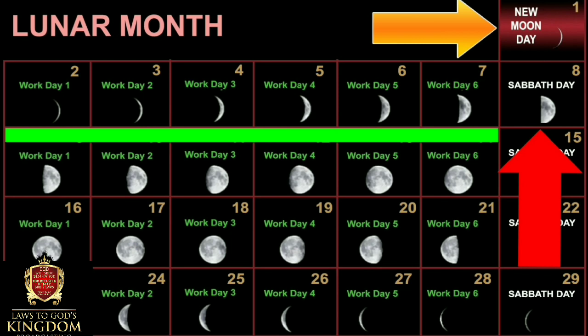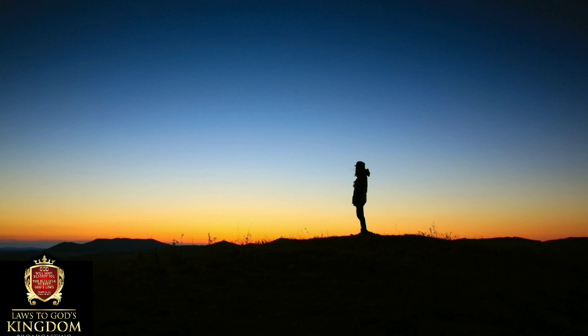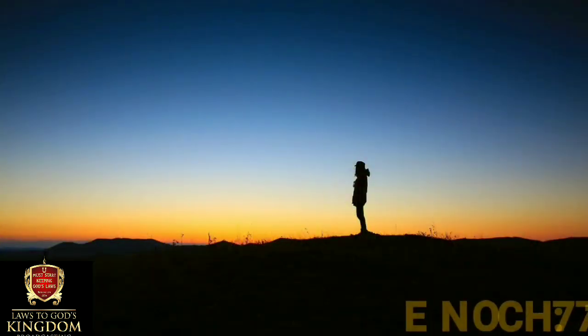If in the evening of the New Moon you are not able to see the moon — you had a clear sky, no cloud coverage toward the West, the sun went down and you still couldn't see the moon — that means you will have a two-day New Moon. The next day will also be a New Moon Day. This is exactly what happened in 1 Samuel chapter 20, where they had a two-day New Moon — they sat down and ate twice.